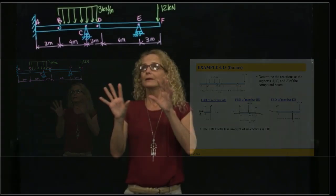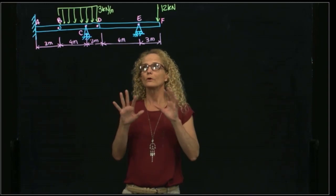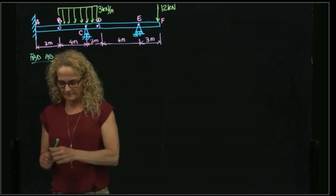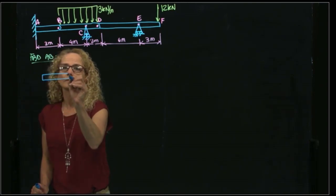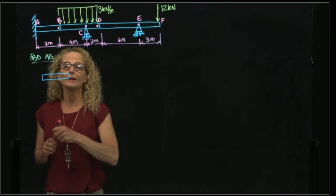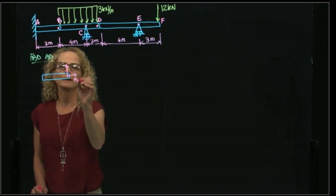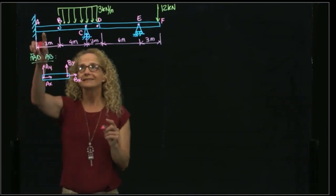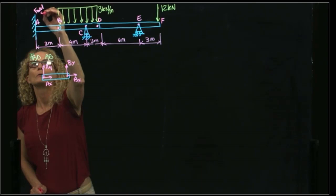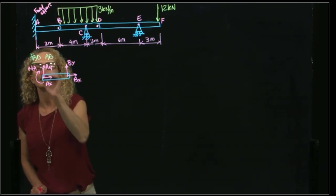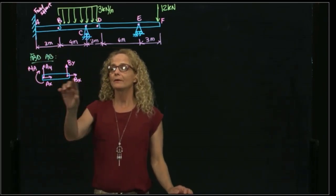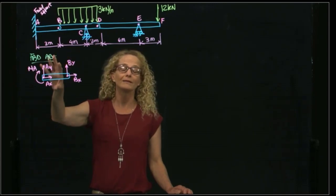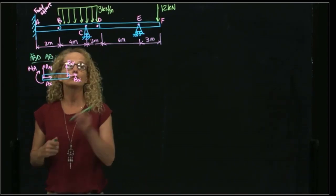So we have three different elements, so let's do the free body diagram of those three elements. For element AB, we have two reactions at B — BX and BY — and reactions AX, AY, and since this is a fixed support, we also have a moment at A. As you can see, we have five unknowns, so we cannot start here because we have too many unknowns.